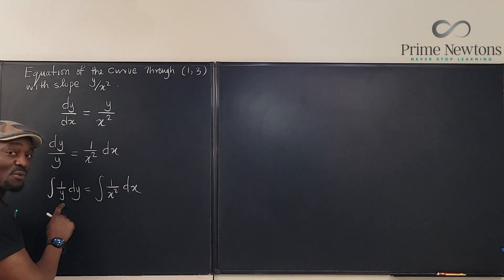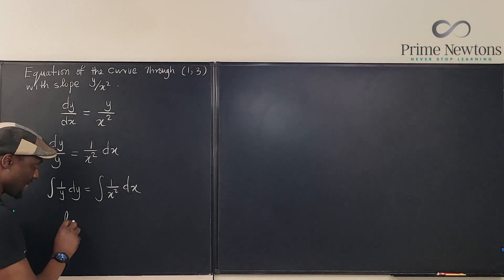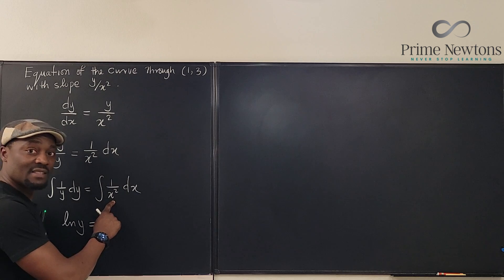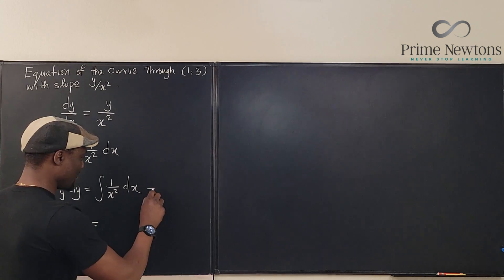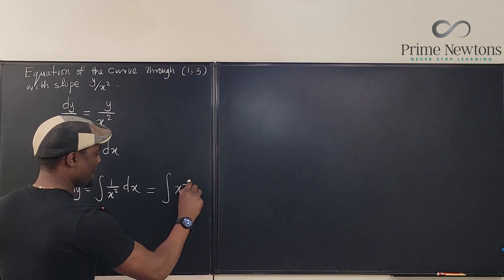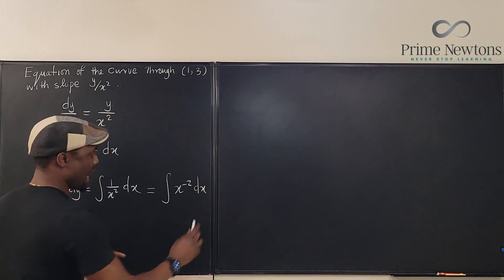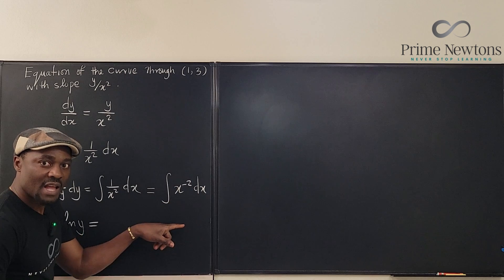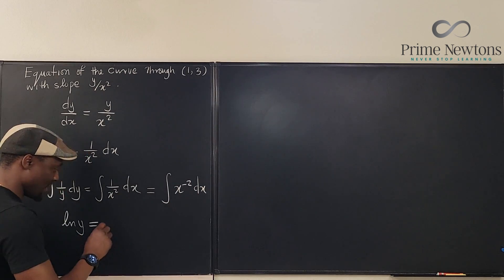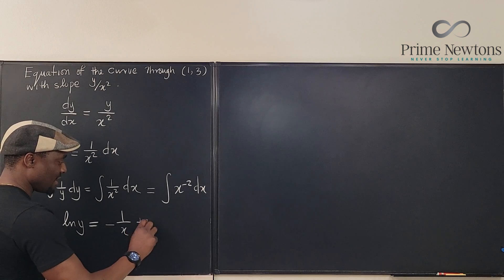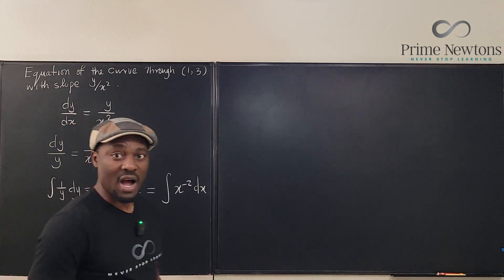If we integrate 1 over y, what do we get? We get the natural log of y. If we integrate this, this we can write actually as the integral of x to the negative 2 dx. So this integral, if you integrate this, add 1 to it and divide by negative 1, you're going to get negative 1 over x plus c. That's what we've got.